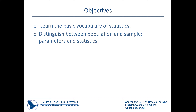The objectives here are to talk about some basic vocabulary of statistics and distinguish between things called populations and samples, and parameters and statistics. Always remember that parameters go with population — they both start with a P, so it's an easy distinction. Samples go with statistic or statistics — both start with S, so that's an easy way to think about that.